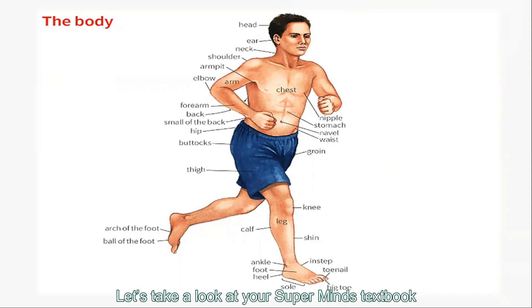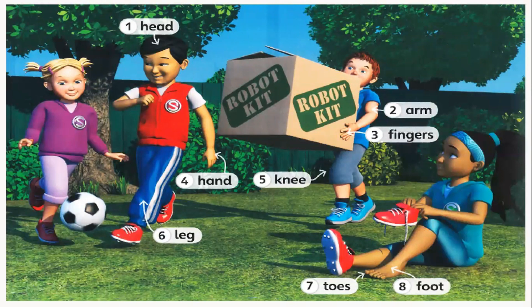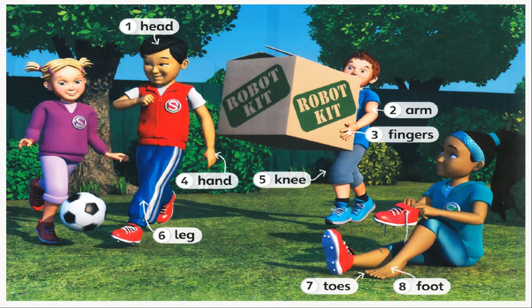Let's take a look at your Superminds textbook, page 94. Now say the words: One — Head, Two — Arm, Three — Fingers, Four — Hand, Five — Knee, Six — Leg, Seven — Toes, Eight — Foot.